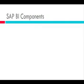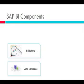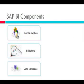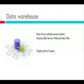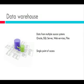An overview of the components again: the data warehouse, the Business Intelligence platform, and the Business Explorer. The data warehouse extracts data from multiple sources and provides a single source of access to the data. We can extract data from Oracle databases, SQL Server databases, web services, and also files — for example, Excel files. All this data is merged and then we can access everything from one single source.